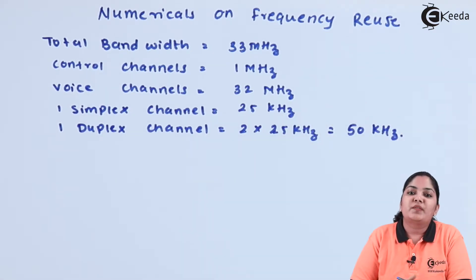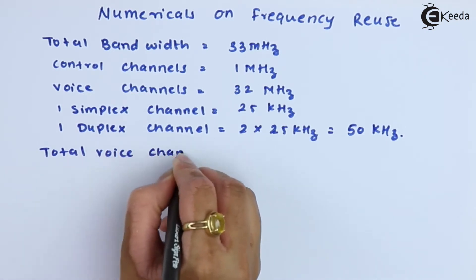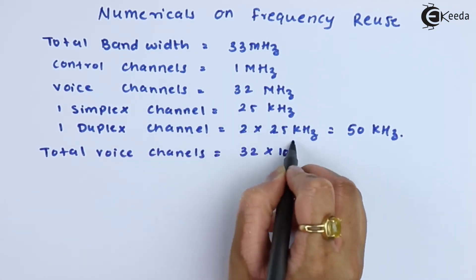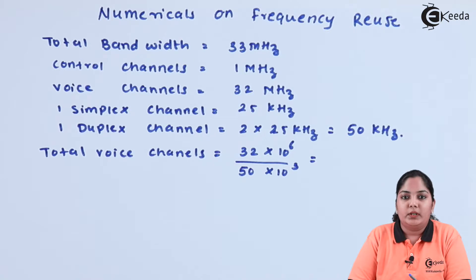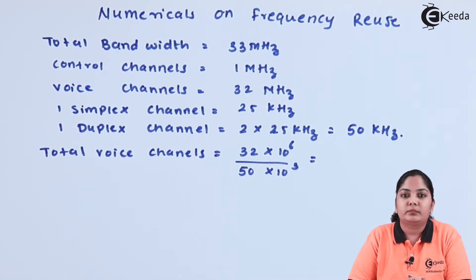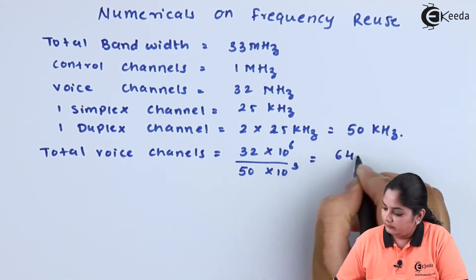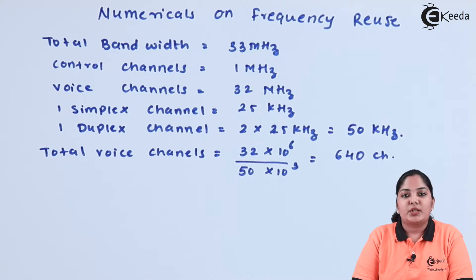Now we will see the total number of channels available in every system. First, we will see the total voice channels available. The total voice band is 32 MHz. We divide by one duplex channel bandwidth of 50 kHz to find how many duplex channels are available. The total is 640 channels.